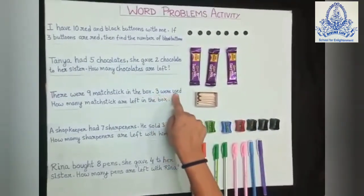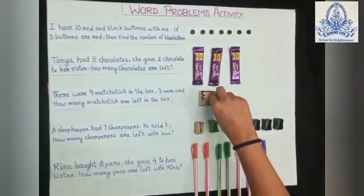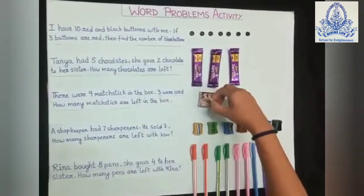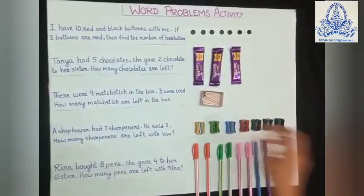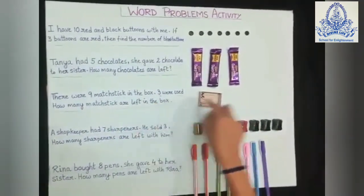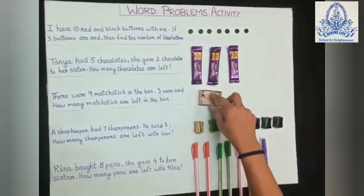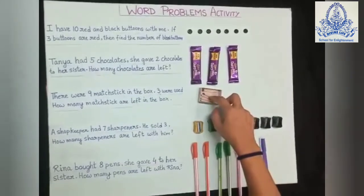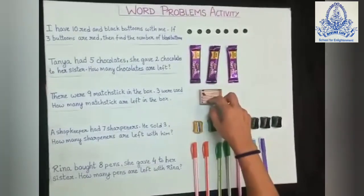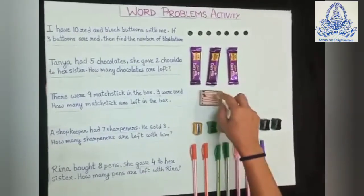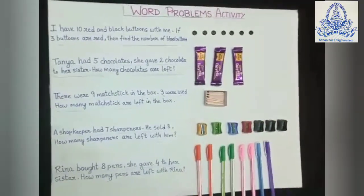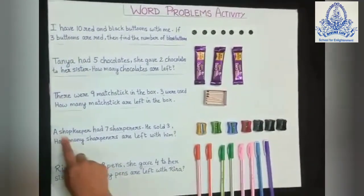And 3 were used, so I will take out 3. How many matchsticks are left in the box? Let me count: 1, 2, 3, 4, 5, 6. Six matchsticks were left in the box. So the answer will be 6.